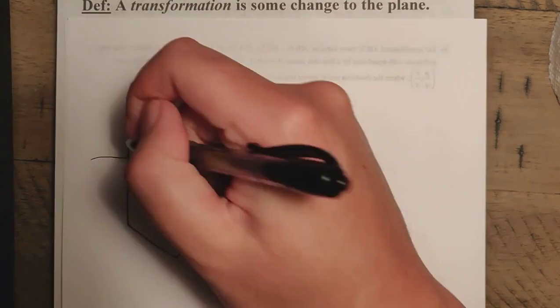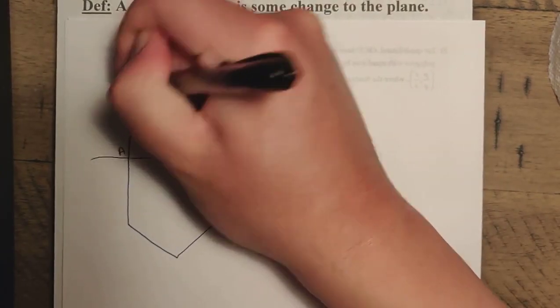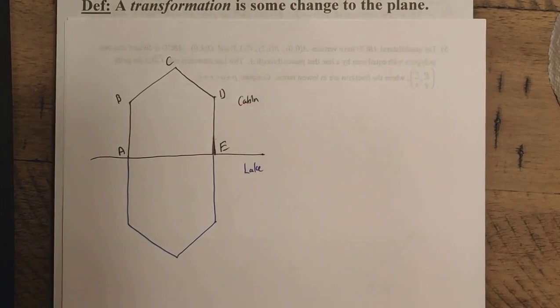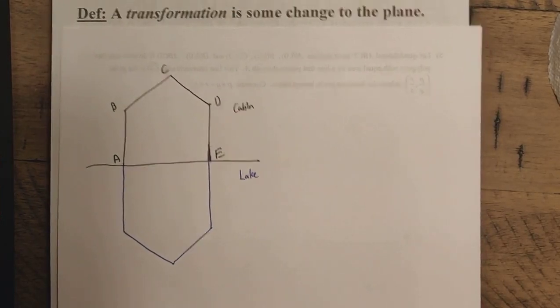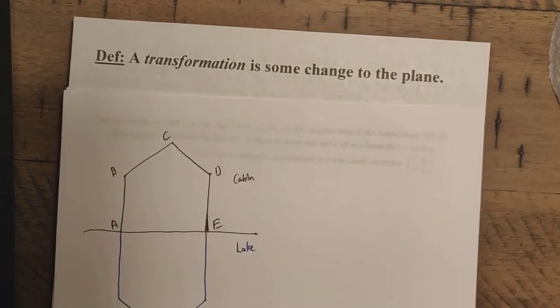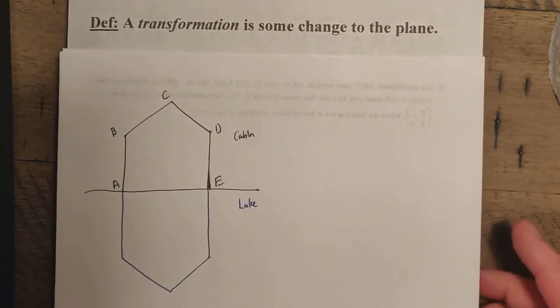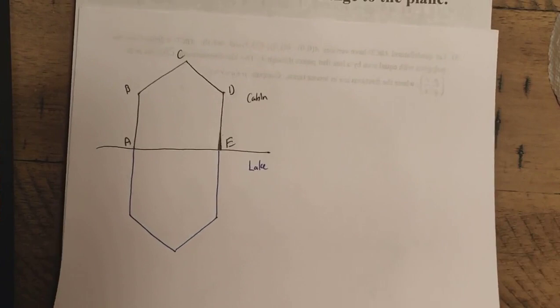So let me go ahead and label the points here so we can see these a little bit better. I'm going to call these points here A, B, C, D, and E here. So these are just, we can think of this as a pentagon in this case here. So we note that this is our original cabin here, whereas this is going to be what you see in the lake here. So we give that a specific name here.